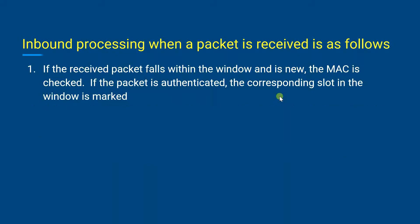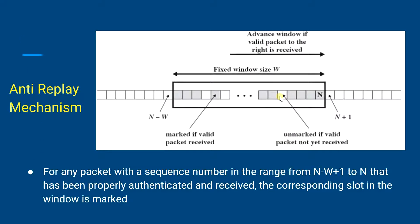The same thing can be observed in the anti-replay mechanism. We consider the window from N minus W plus one to N. This window frame can be advanced, or it can shift, but we must ensure that we receive a valid packet.